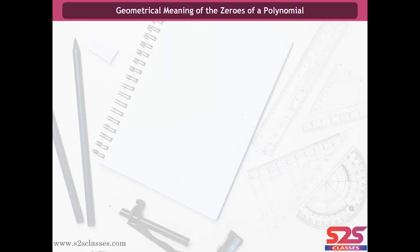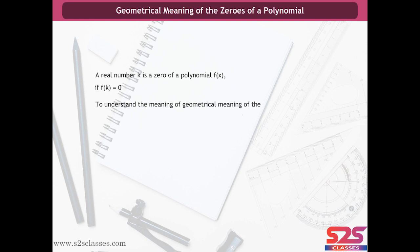Geometrical Meaning of the Zeros of a Polynomial. A real number k is a zero of a polynomial f(x) if f(k) is equal to zero. To understand the geometrical meaning of the zeros of a polynomial, first we have to learn the geometrical representation of a linear polynomial, quadratic polynomial, and cubic polynomial.